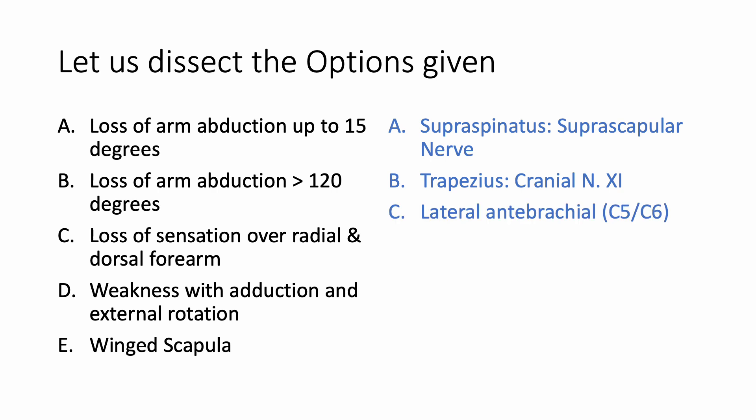Option C says loss of sensation over the radial and dorsal forearm. This is supplied by the lateral antebrachial cutaneous nerve, which is C5-C6. That's not really high yield, but it's a distractor.